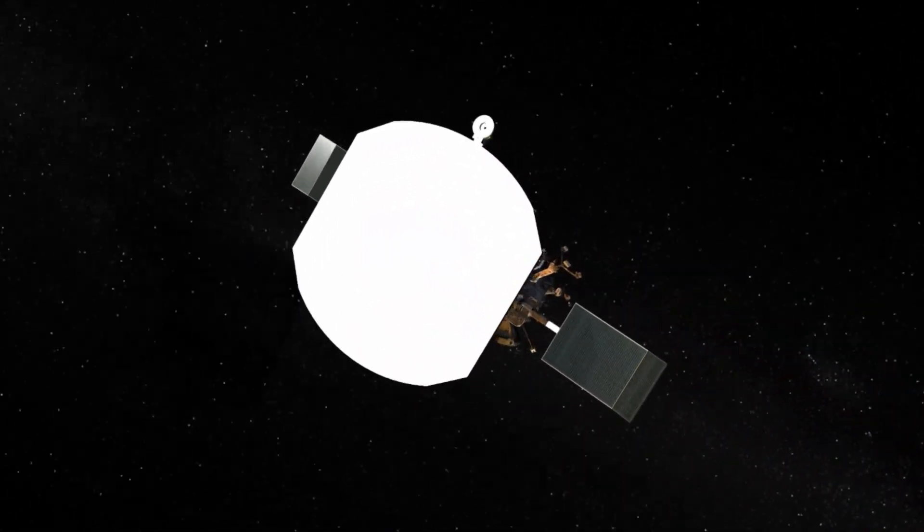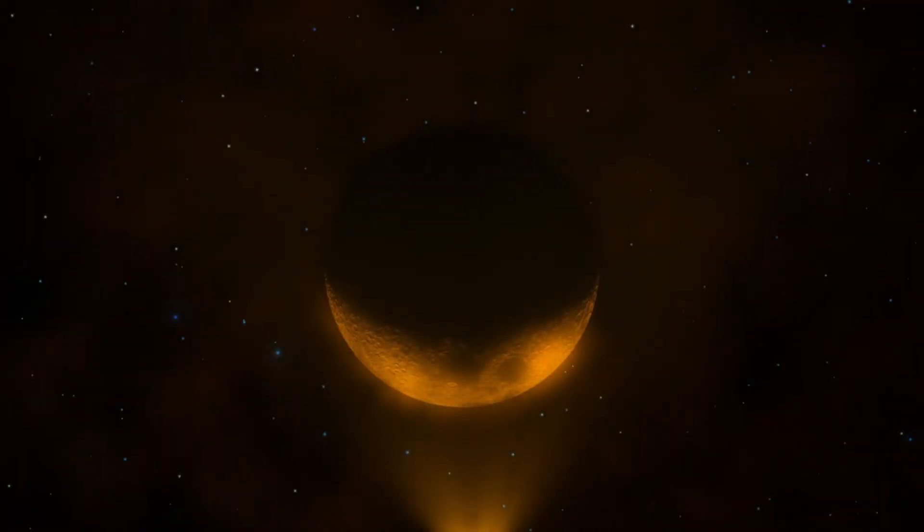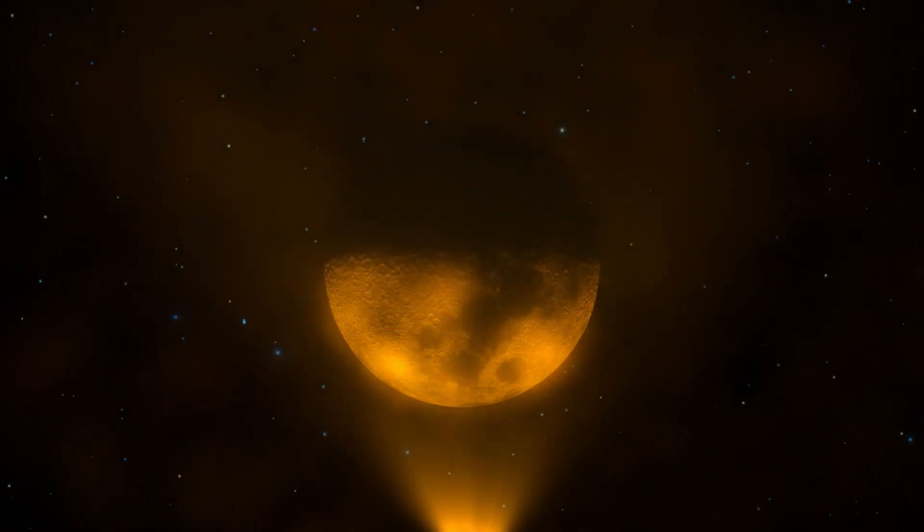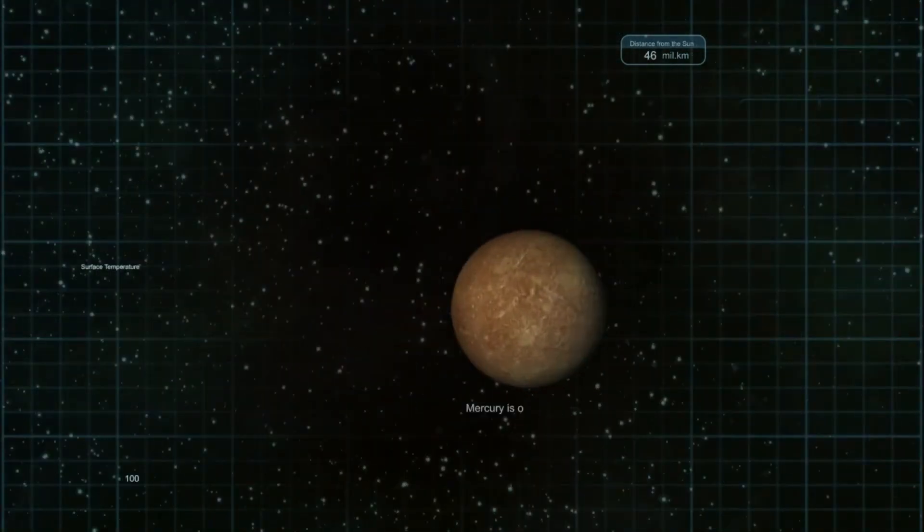After passing Saturn, the two spacecraft split paths. Voyager 1 passed by Titan, the moon cloaked in an orange haze, and then turned north, away from the plane of the planets. Voyager 2 continued to Uranus and Neptune, making it the only spacecraft to visit these planets.